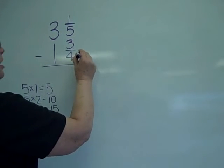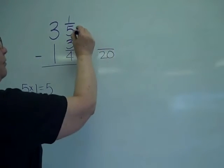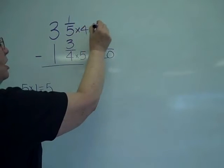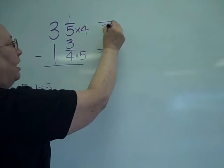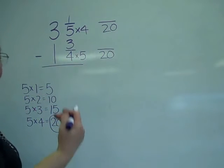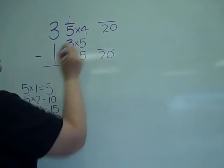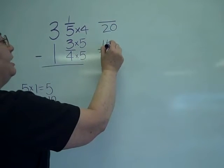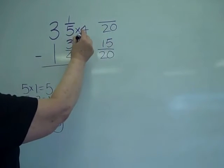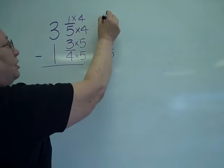I know to get my four times five to equal the twenty, and my five times four will equal the twenty. And remembering, whatever you do to the bottom or the denominator, you have to do to the top or the numerator. So three times five is fifteen, and then four times five, so one times four gives you four.